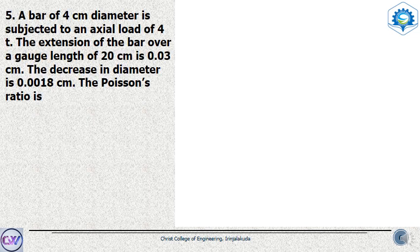Now, another numerical question on Poisson's ratio. A bar of 4 cm diameter is subjected to an axial load of 4 ton. The extension of the bar over a gauge length of 20 cm is 0.03 cm, and the decrease in diameter is 0.0018 cm. We have to find the Poisson's ratio; options are 0.25, 0.3, 0.33, and 0.35.